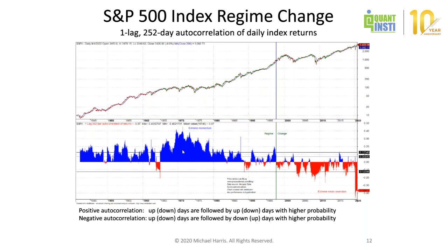In the 1970s there was extreme momentum in the markets, and this fooled a lot of people — especially technical analysts — into thinking simple chart patterns would provide profits. Although they did for some time, they stopped working by the late 90s due to the positive autocorrelation. When markets became mean-reverting, only a different approach would work, as we will see.